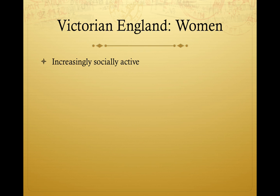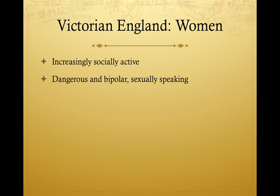That doesn't mean this is a super progressive era. By and large, women still don't have full participation in British society — they're still intended to be seen and not heard. There's a very old stereotype of how women must be viewed from a sexual standpoint as a little bit dangerous and bipolar. The Victorian England stereotype is that women are either frigid or sexually insatiable. These stereotypes are not based on any fact, but the overall result is that women needed to be protected from men and also protected from themselves.